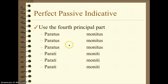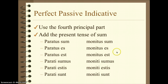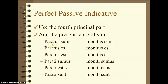The fourth principal part by itself is something entirely different. It's still perfect and still passive, but it isn't indicative — which means it's actually happening. We need a whole other word. This is a two-word format — that's what I always call it. Perfect passive forms are always two words.